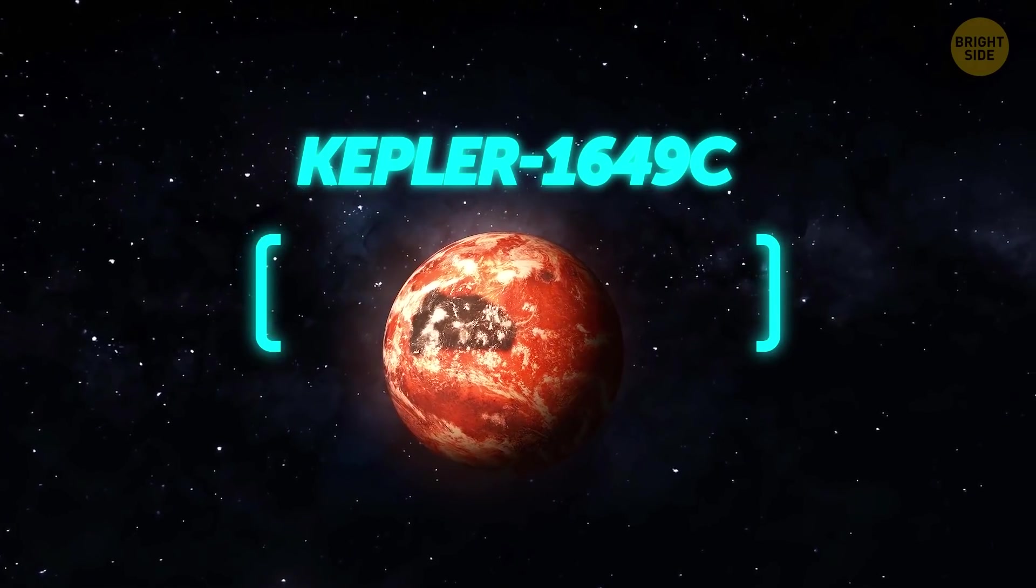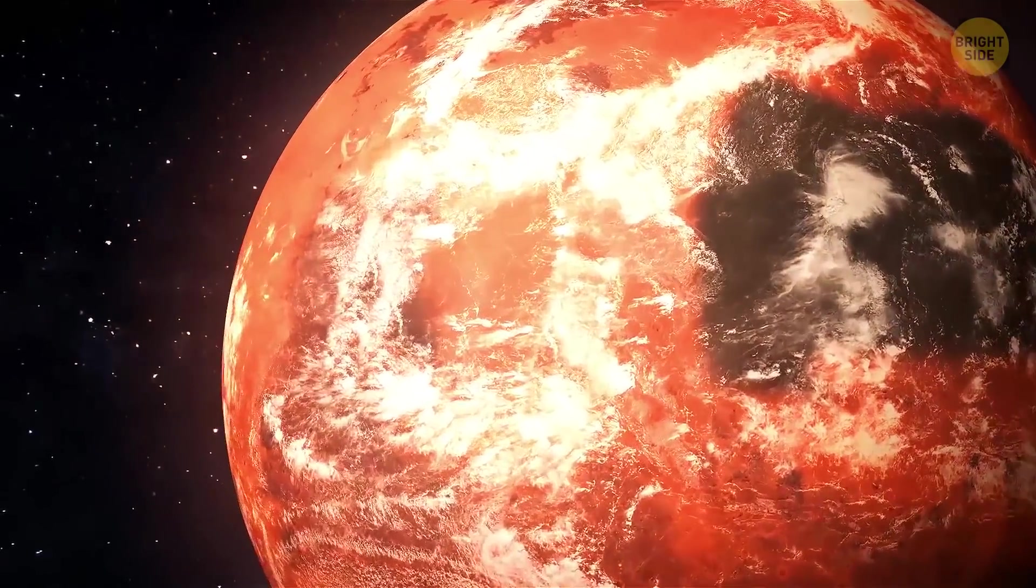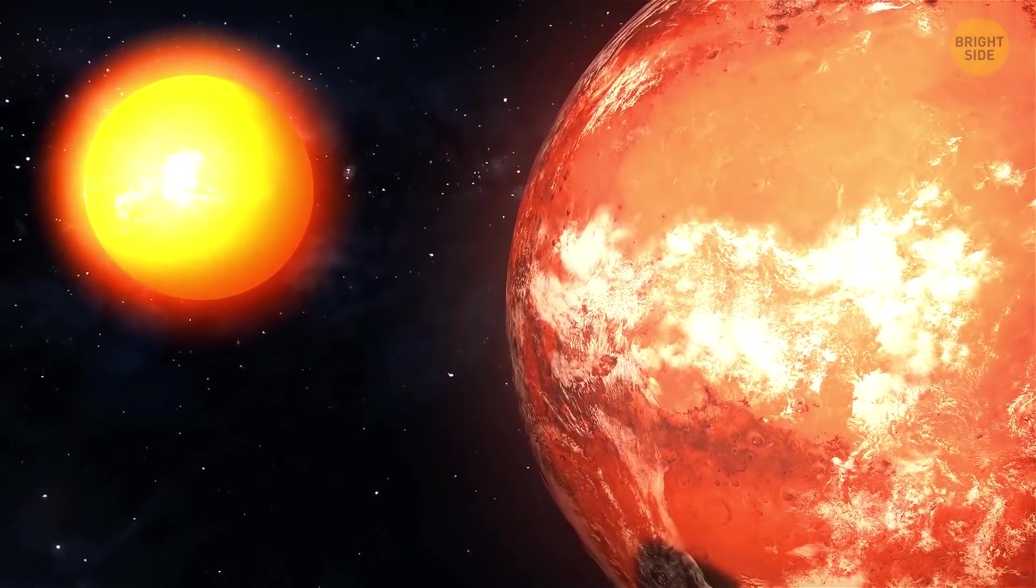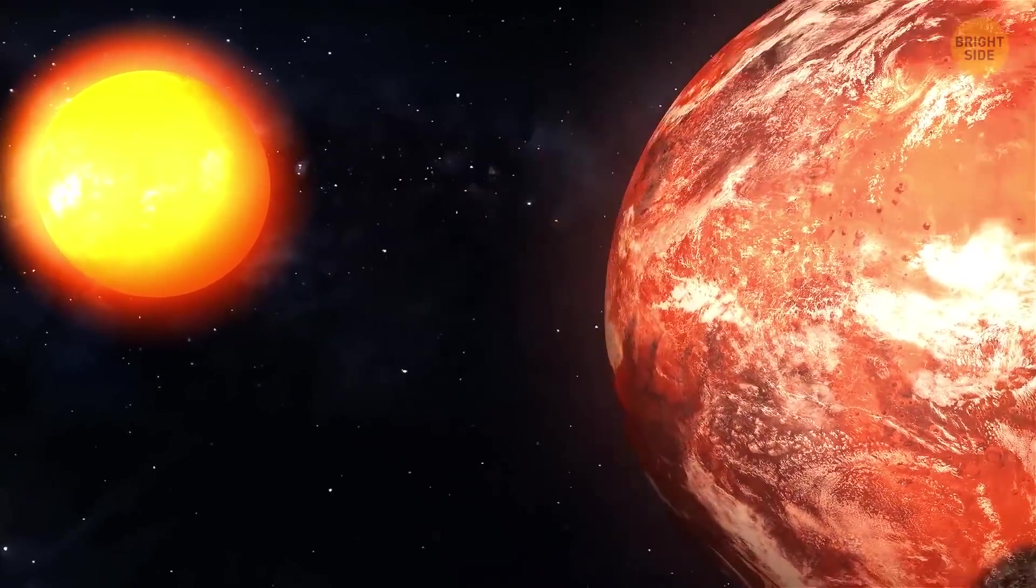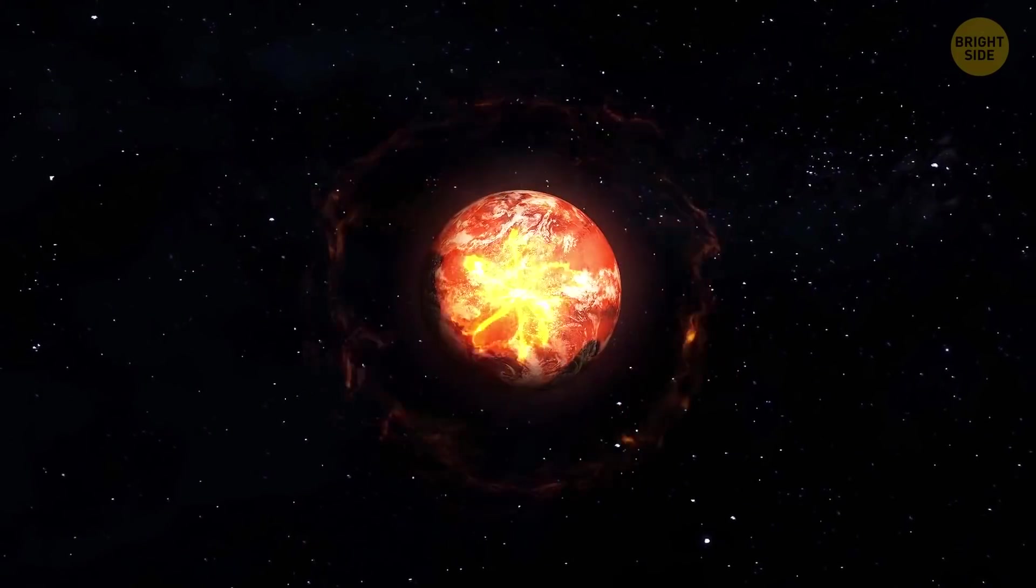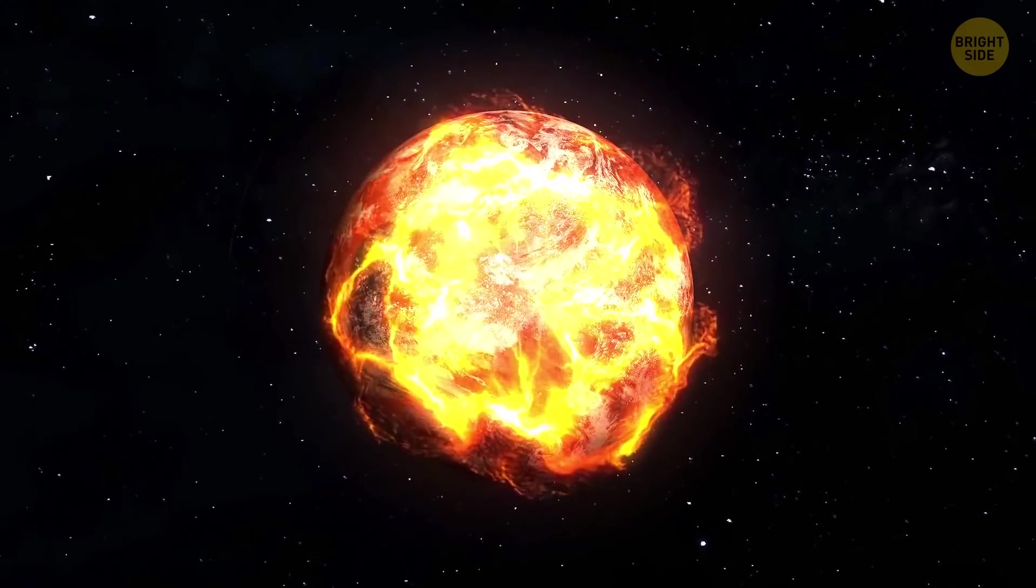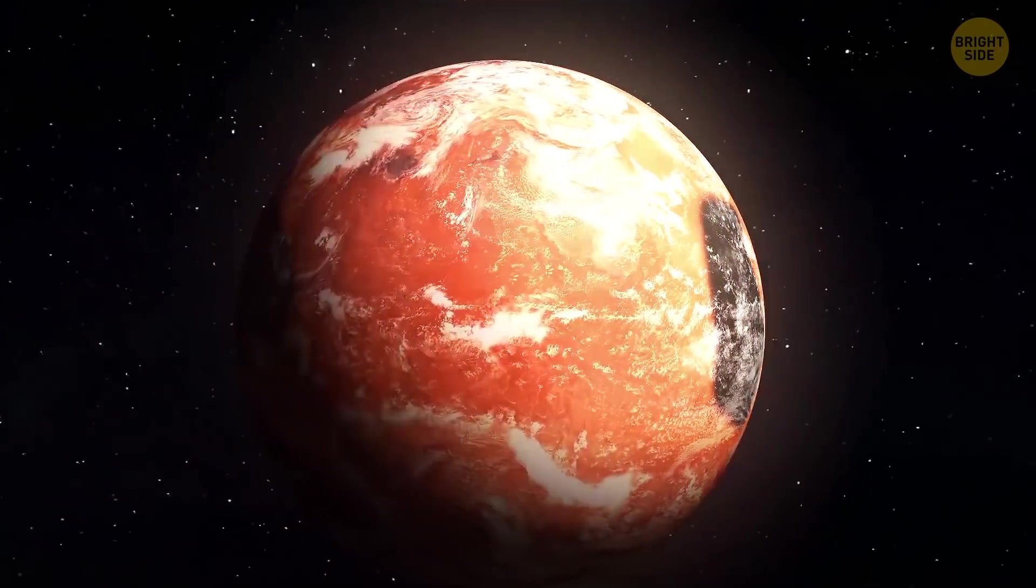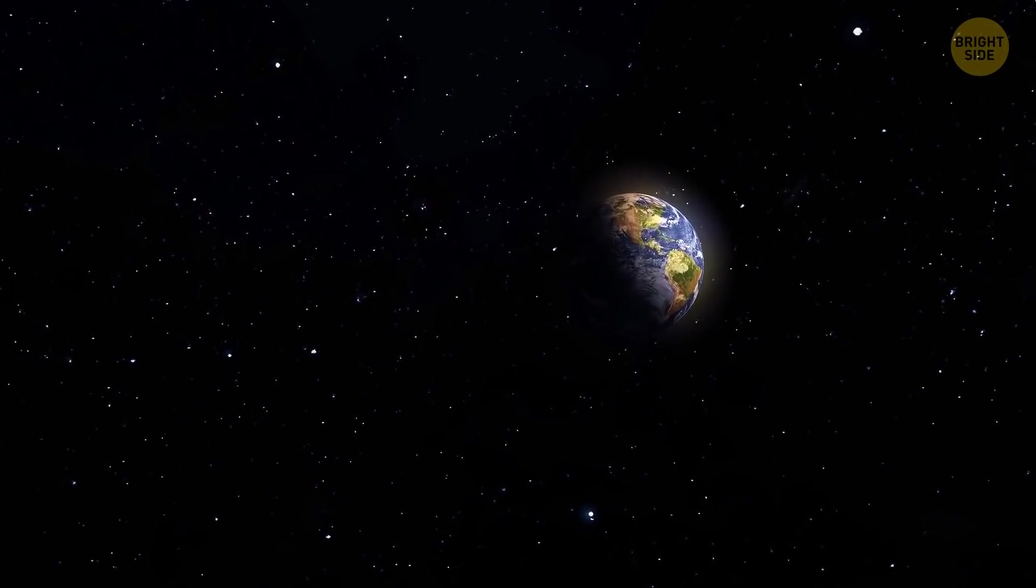Kepler-1649c is only 6% larger than Earth and probably consists of the same minerals. It also receives about as much light and energy from its star as we receive from the Sun. The only problem for now is that the star could flare up too often, making the surface of the planet too hot and scorching its atmosphere. Still, there's no proof of it yet, and we could have a potentially habitable planet pretty close to home.